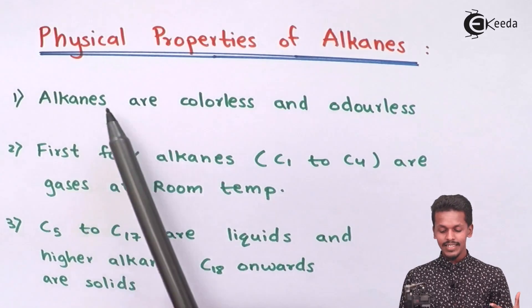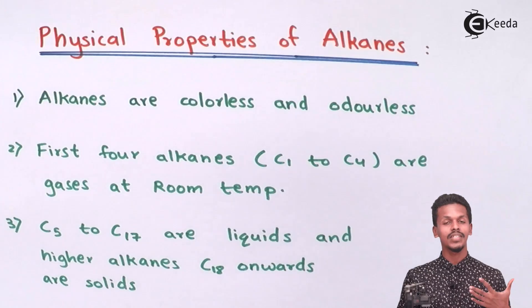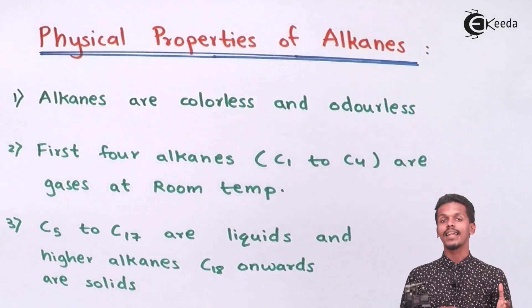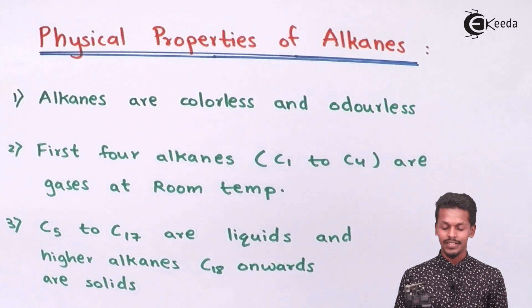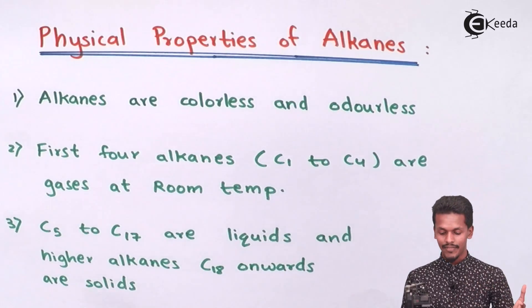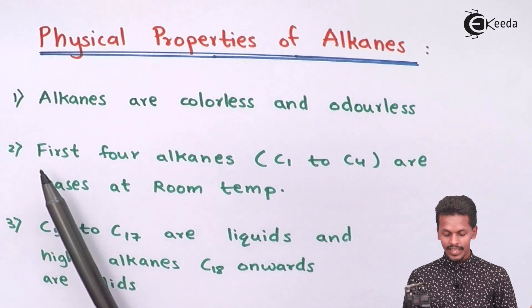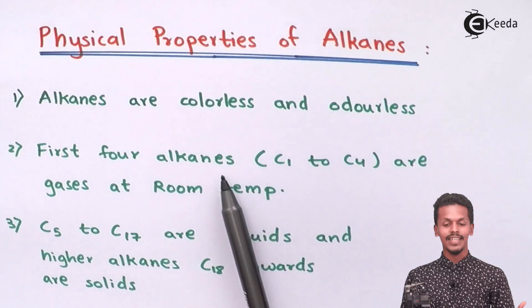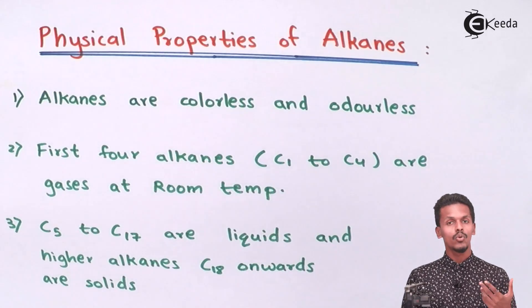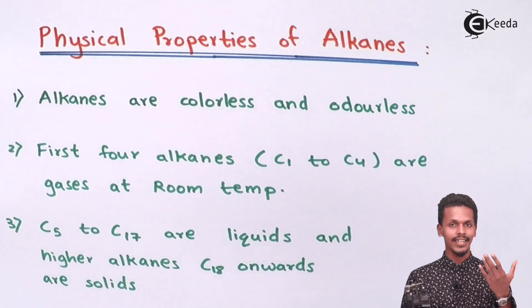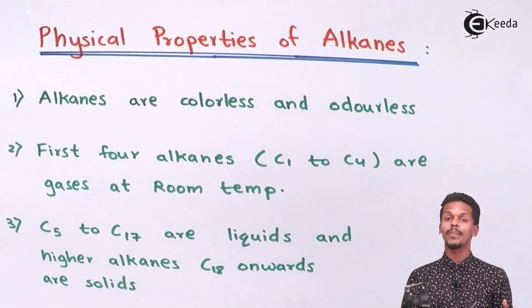Starting with the first property: alkanes are colorless and odorless. These compounds have no color and no smell. Moreover, the first four alkanes — from carbon number one to carbon number four, that is from methane to butane — are basically gases at room temperature.